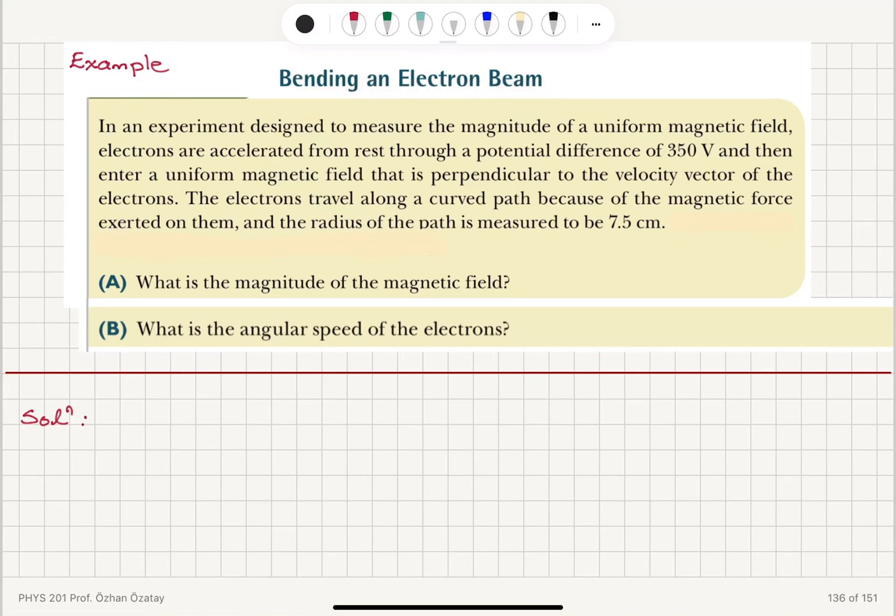Bending an Electron Beam. In an experiment designed to measure the magnitude of a uniform magnetic field, electrons are accelerated from rest through a potential difference of 350 volts and then enter a uniform magnetic field that is perpendicular to the velocity vector of the electrons. The electrons travel along a curved path because of the magnetic force exerted on them, and the radius of the path is measured to be 7.5 centimeters.